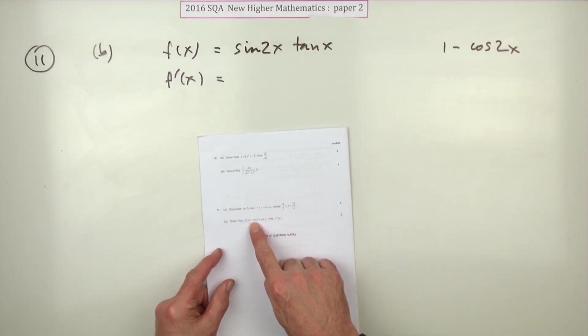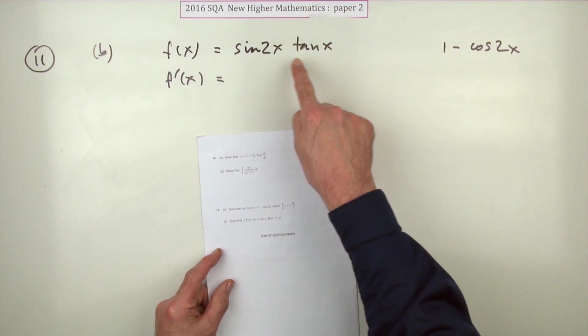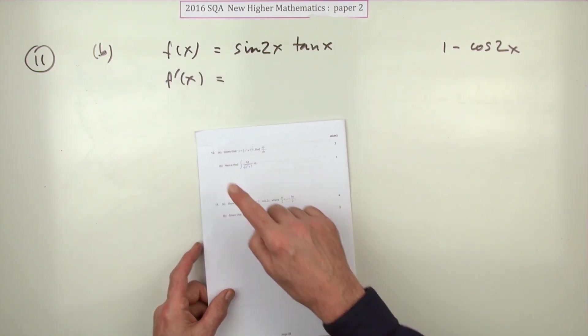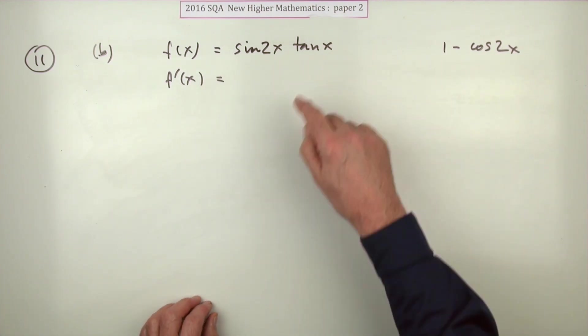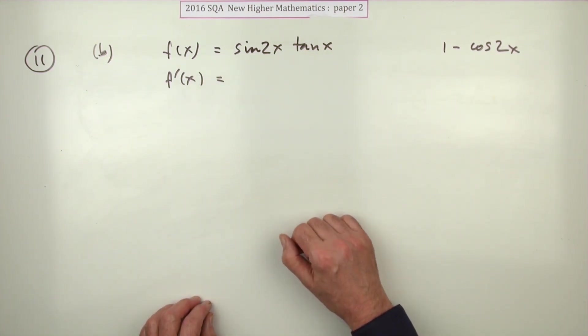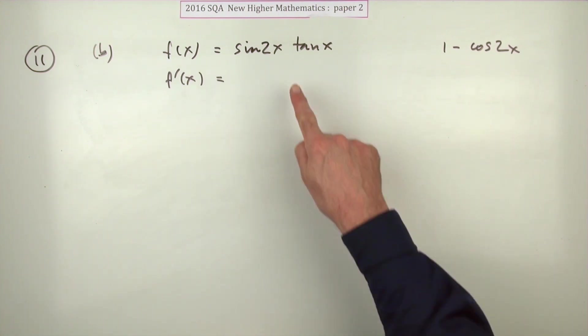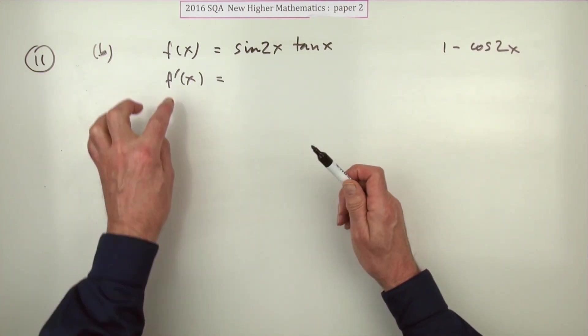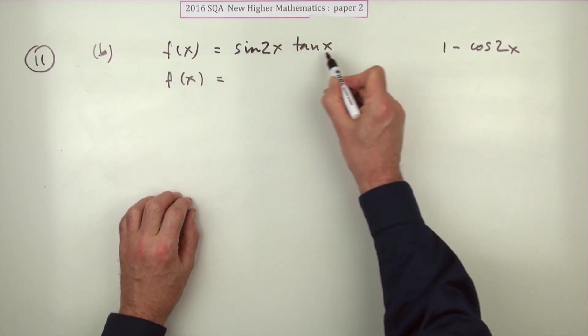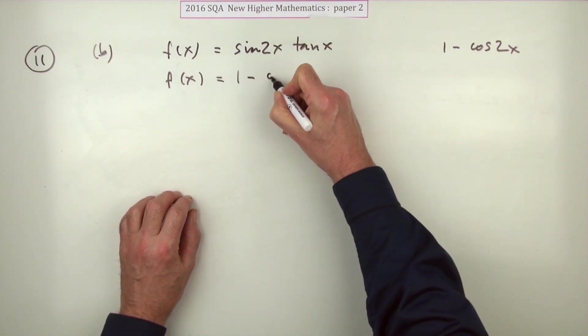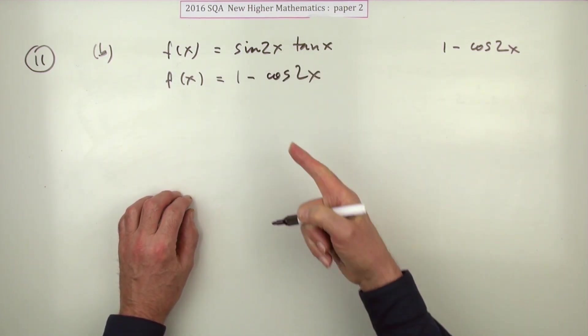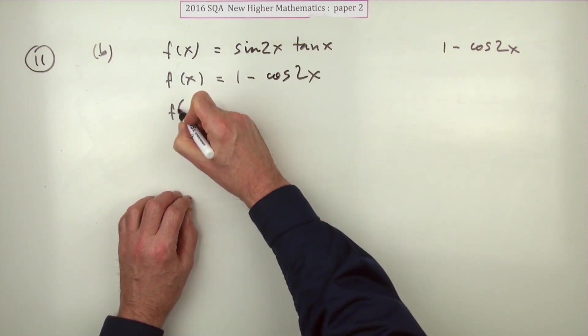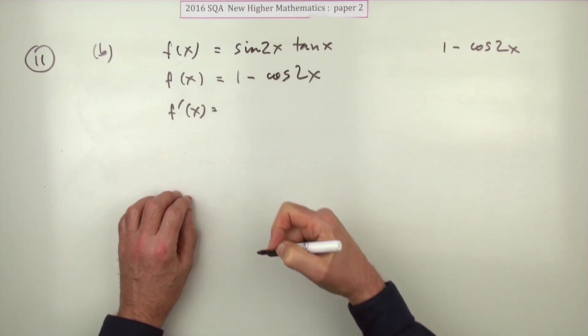And part B then, for two marks. Given that f(x) equals this, which was the left-hand side, find the derivative. Well, you don't know how to differentiate that—it's a product in the first place, and you don't know how to differentiate tan anyway. But you knew it was equal to this, so instead of that, you're going to differentiate this. So I'll just rewrite it. So instead of differentiating that, since it's identical to 1 - cos(2x), I'll differentiate that instead.